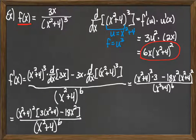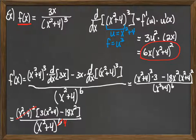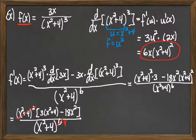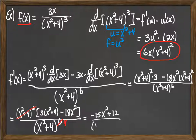We have (x squared plus 4) to the sixth in the bottom and (x squared plus 4) squared in the top, so we cancel two powers from each, leaving (x squared plus 4) to the fourth in the denominator. Now simplifying the numerator: 3 times (x squared plus 4) gives 3x squared plus 12, and minus 18x squared combines to give negative 15x squared plus 12. So the final result is (negative 15x squared plus 12) over (x squared plus 4) to the fourth.